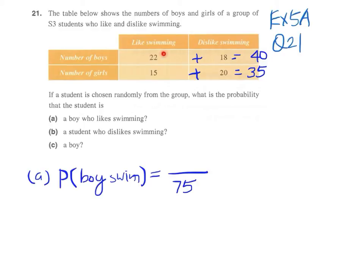We have a boy who likes swimming. This part is boys who like swimming and dislike swimming. There are only 22 boys who like swimming, so our numerator will be 22. The number of favorable outcomes will be 22.